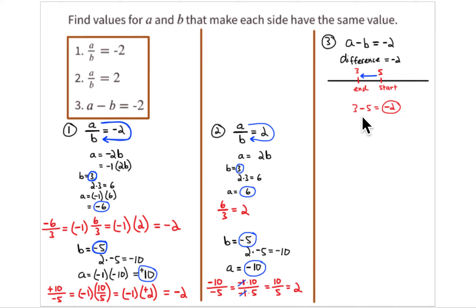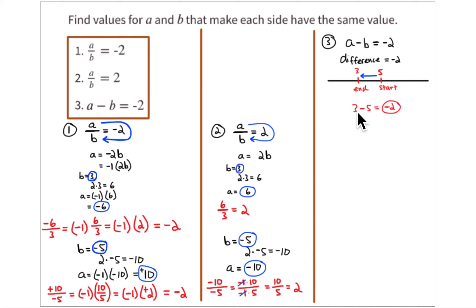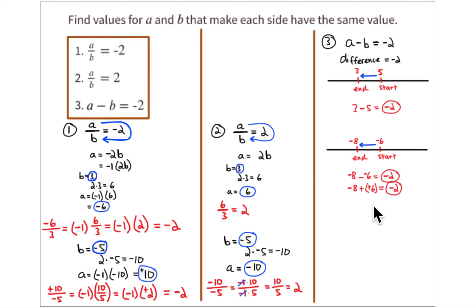To calculate this, you can also look at 3 minus 5 as 3 plus negative 5. With numbers of opposite signs, subtract the absolute values: 5 minus 3 is 2, and it takes the sign of the larger absolute value. So the answer is negative 2.